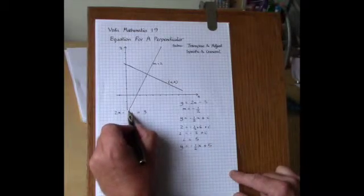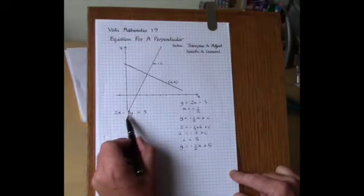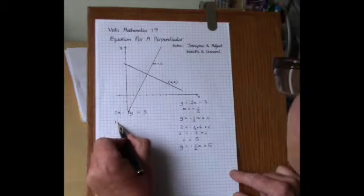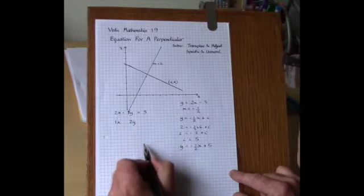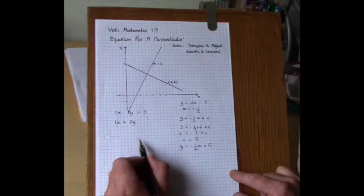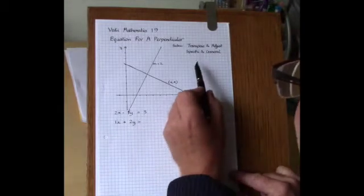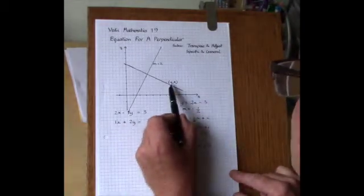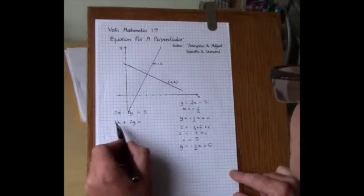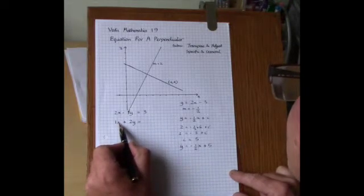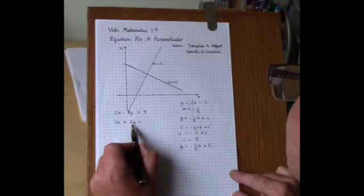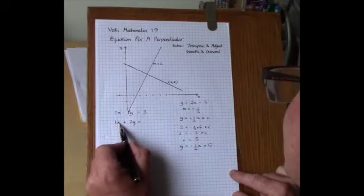Now the Wadek one line method works like this. You take the coefficients of x and y and transpose them. So you get 1x and 2y. And you then change the sign in between the two terms. So from a minus to a plus in this case. And then using the specific and general rule we apply the coordinates 6 and 2 to the left hand side of this equation in order to obtain the right hand side. So 1x is 1 times 6 plus 2 times 2 is 10.